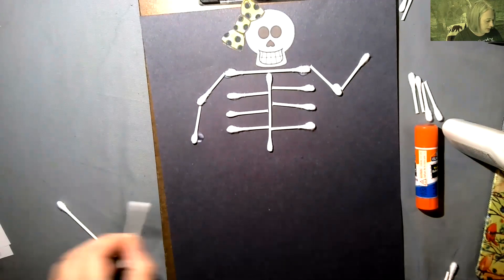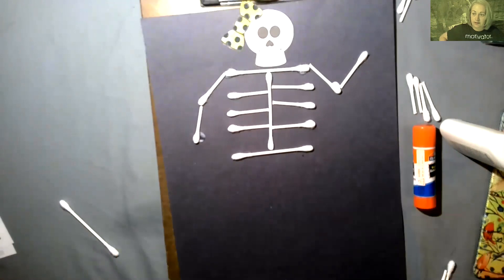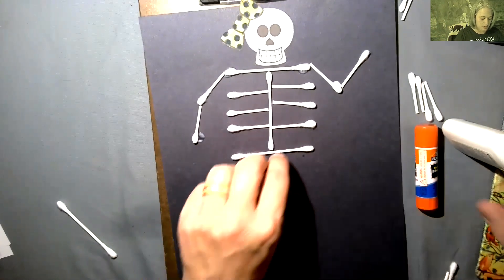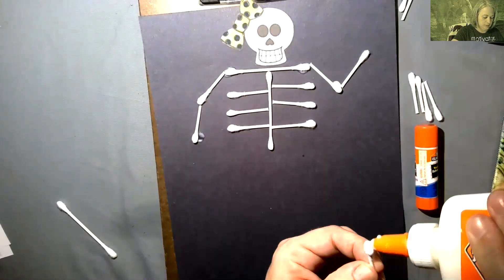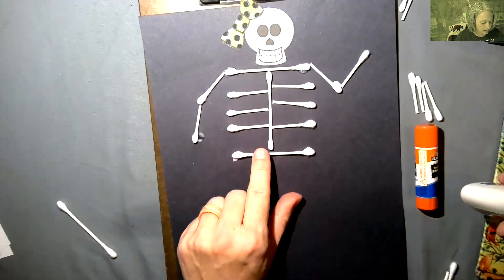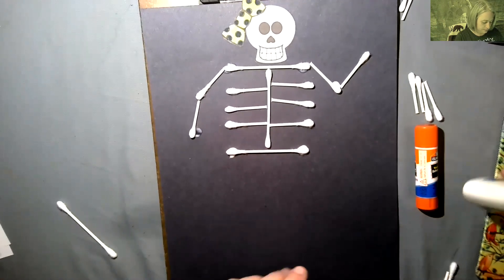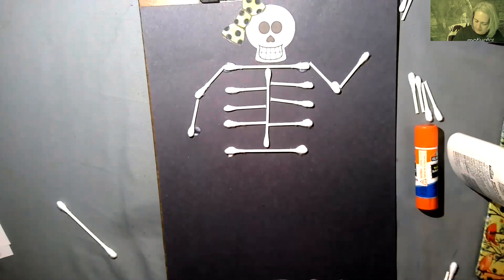Okay, next thing is you're going to take a whole Q-tip and go across right there and it's going to be the hip bones. Glue only on the cotton part.